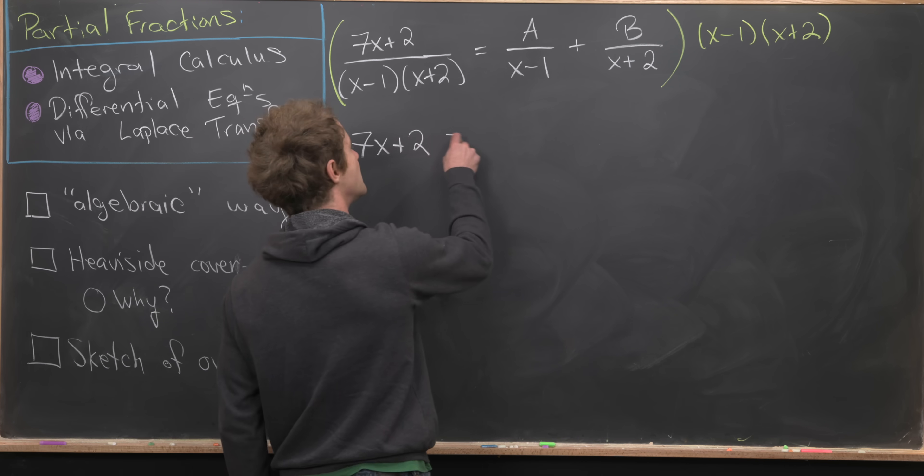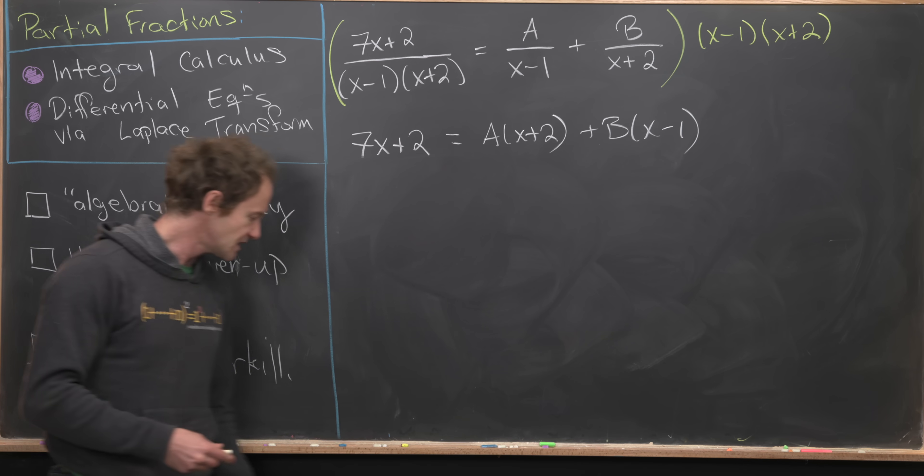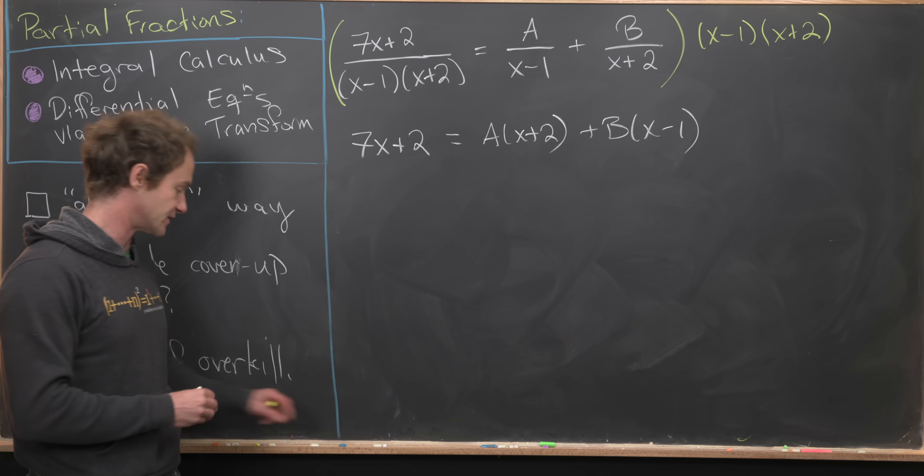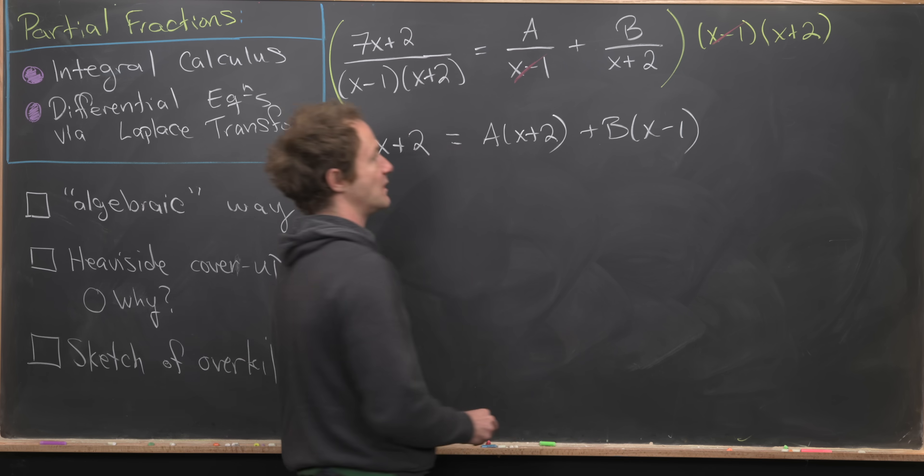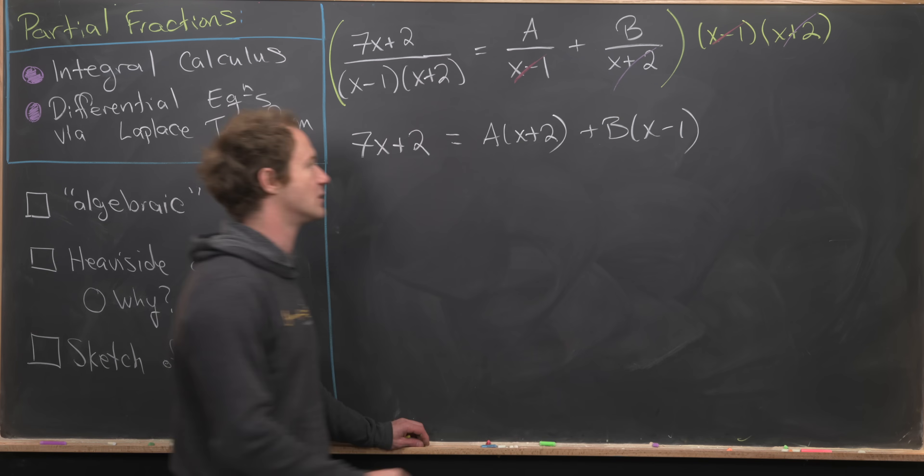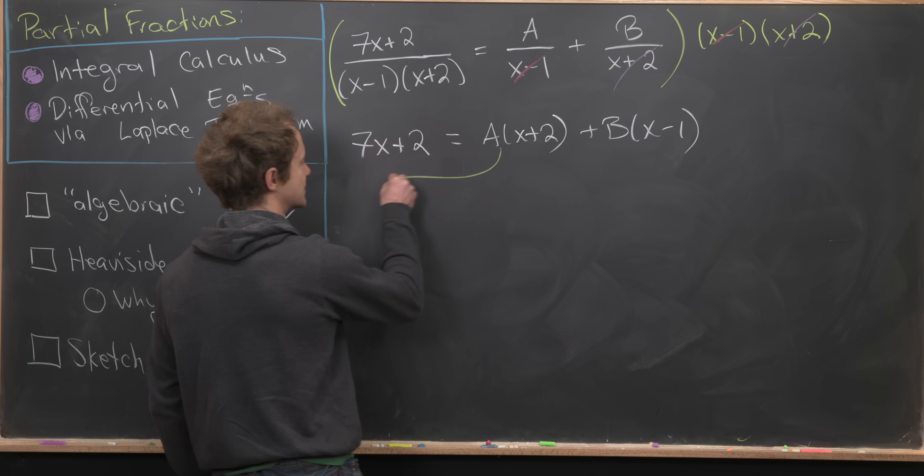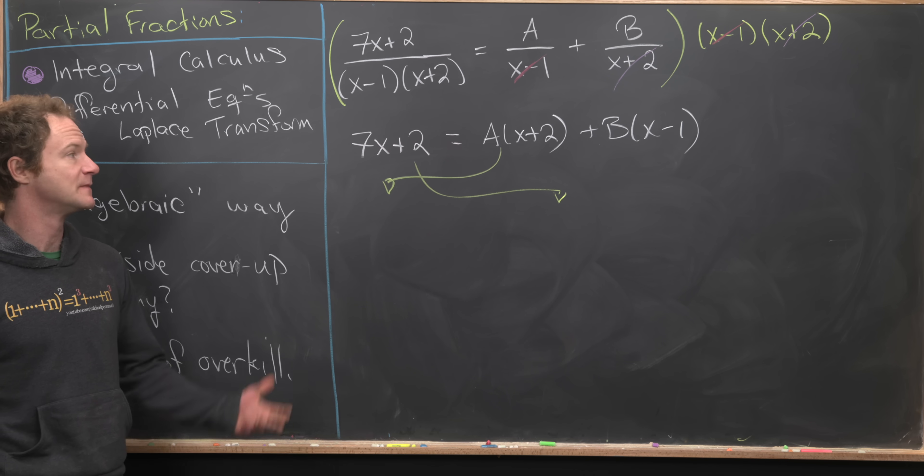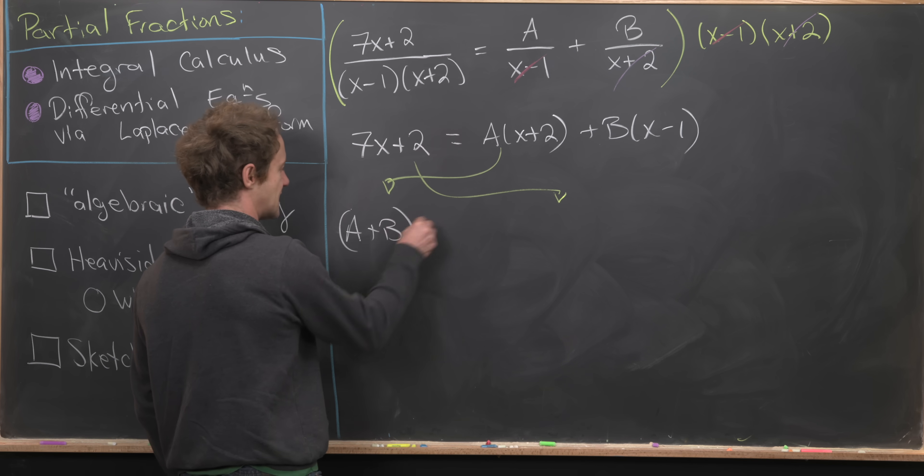On the left-hand side, that's going to give us 7x plus 2 because both terms in the denominator are cancelled. Then on the right-hand side we'll have A times (x plus 2) plus B times (x minus 1). I'm going to rearrange this a little bit. I like to swap the order of this equality. Notice I have A plus B times x, so I can take the x out.